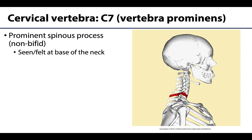C7, the most inferior cervical vertebra, has the most posteriorly projecting spinous process of all the cervical vertebrae, making it quite prominent. This is useful for counting vertebrae. Having someone flex their neck will cause C7's spinous process to project further out than the rest, making it easier to identify.